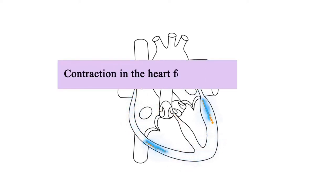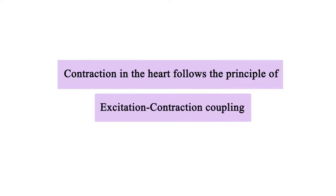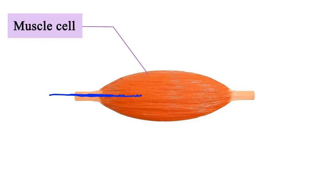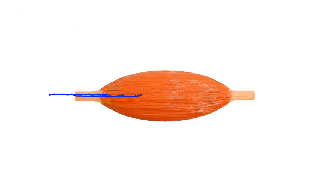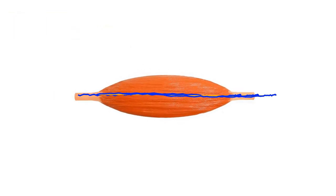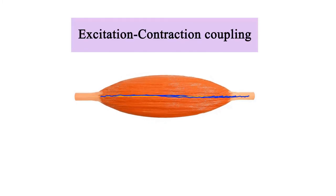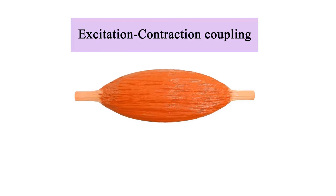Contraction in the heart follows the principle of excitation-contraction coupling. When a muscle cell is electrically excited by an action potential, contraction of the myocytes follows immediately. This relationship between electrical excitation and muscle contraction is known as excitation-contraction coupling. Therefore, when a contractile cell in the heart receives an action potential, it contracts.